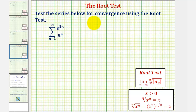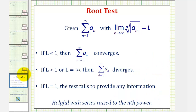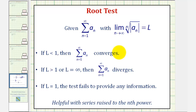We want to test the series below for convergence using the root test. To apply the root test, given the summation of a sub n, we find the limit as n approaches infinity of the nth root of the absolute value of a sub n, which will equal L. Based upon the value of L, we can determine if the series converges, diverges, or if the test fails.